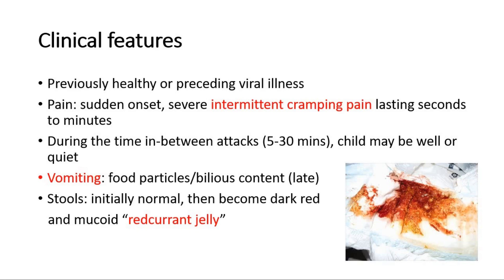Early vomiting usually consists of undigested food particles. If the child presents as a late presentation, the vomiting might be bilious due to intestinal obstruction, with greenish content. For stools, they are initially normal, and then in late stages they might become dark red and mixed with mucus. This is a pathognomonic sign of intussusception called the red currant jelly stool — however, this is only seen in late cases.